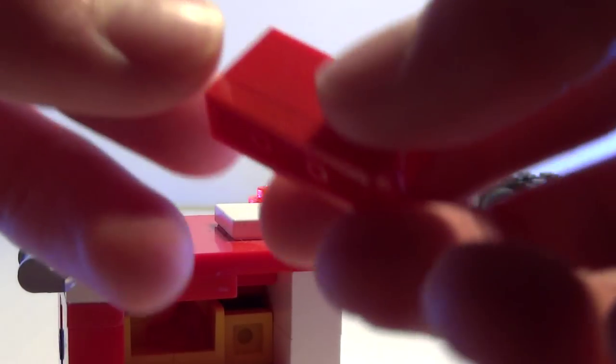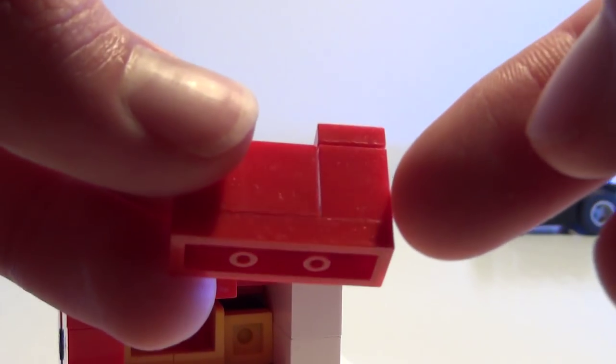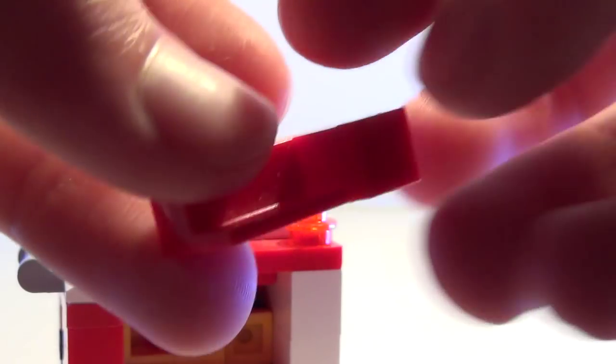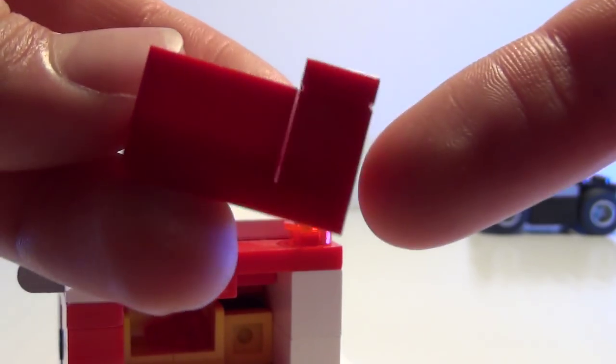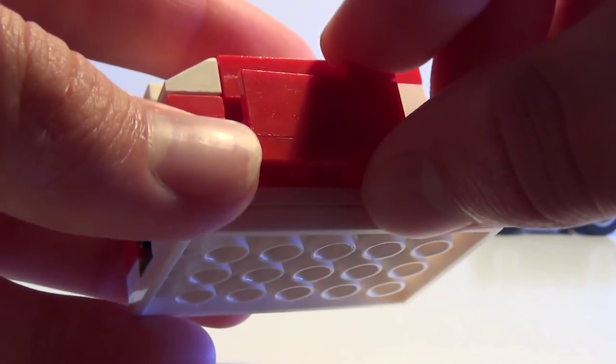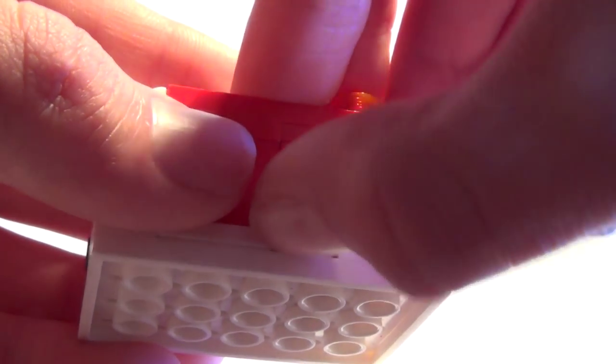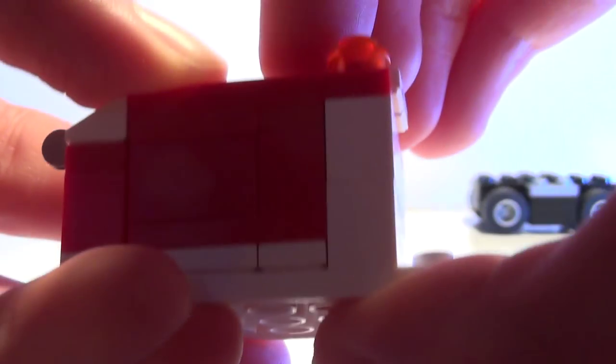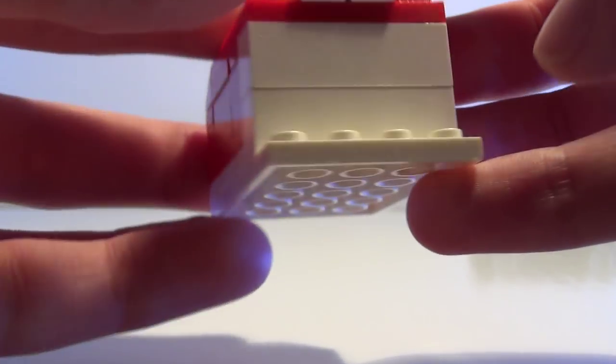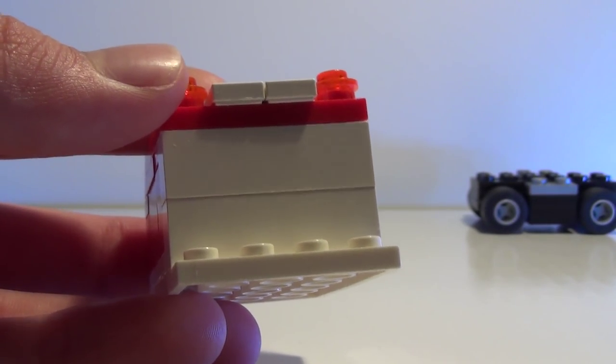The door here, use a 1x3 couch piece whatever, and a 1x1 brick and 1x1, 1x1 smooth. Here, there you go, and now you...